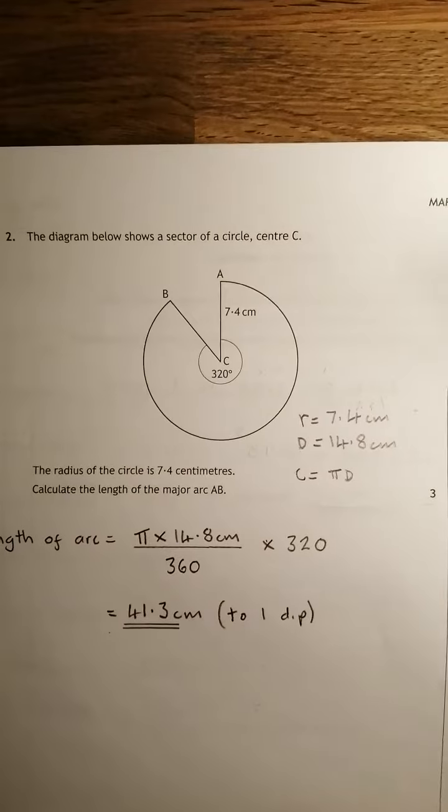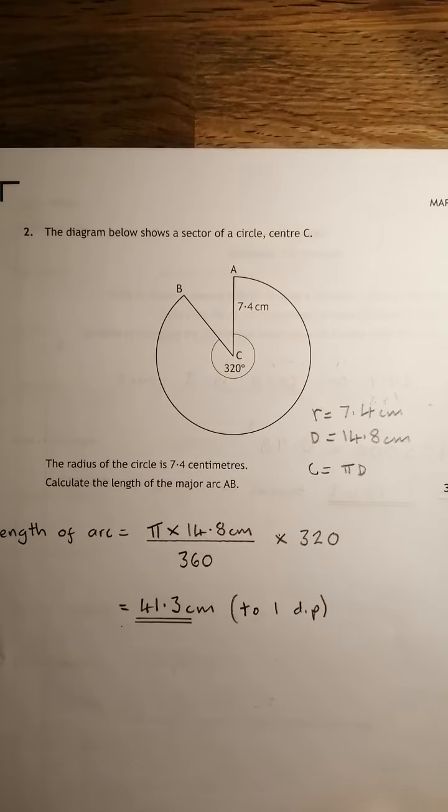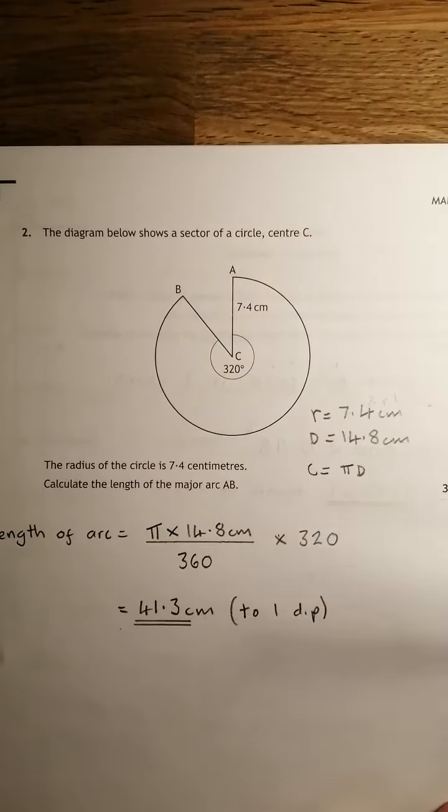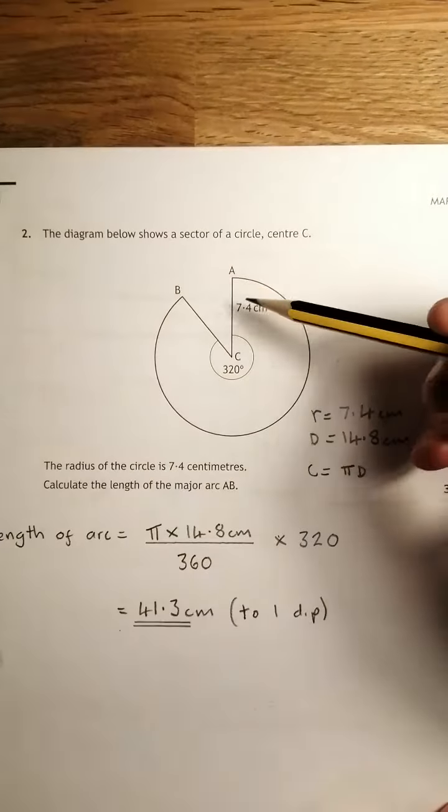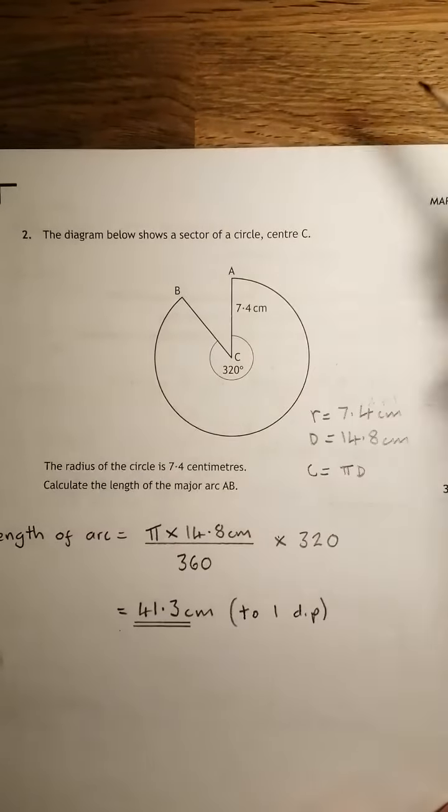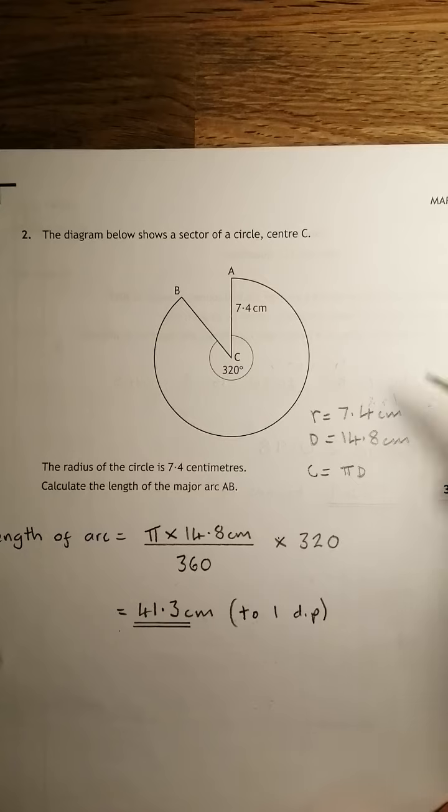Number 2 is one of the get the length of the arc ones, so you're given a circle, or a sector. Centre C, a radius of 7.4, so that means a diameter of 14.8.